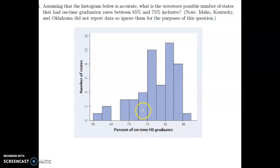So in terms of how many states are in between there, well, these two bars are definitely in, no matter what, because the entire portion of the bar is in between 65 and 75. So it looks like we have three states in this bar and three states in this bar. So six states definitely have graduation rates in between these two numbers here.